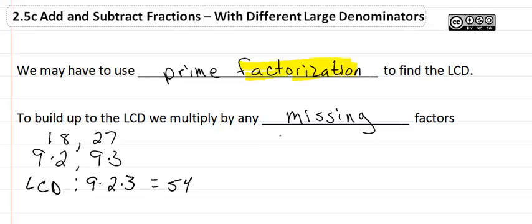This is exactly what you would get if you did the prime factorization. 18 would be 2 times 3 squared, 27 is 3 cubed. And so when we do the LCD, we would get 2 times 3 cubed, which again would give us 54.